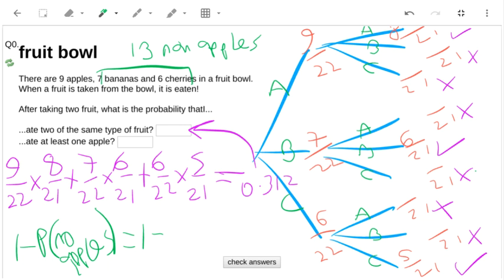So what I have is, for my first pick, I've got to choose a non-apple - that's 13 from 22. And for my second pick, because I've already chosen a non-apple, there's only 12 non-apples left.